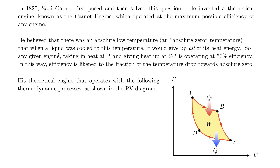Any given engine that takes in heat at T and then gives up half of its heat — making it halfway to absolute zero — would be 50% efficient. And an engine that takes in heat at T and only makes it down to 0.9T would be 90% efficient. In this way, the closer we can get to absolute zero, the more efficient our engine is going to be.